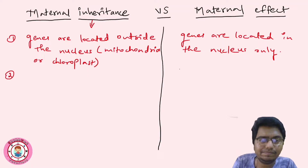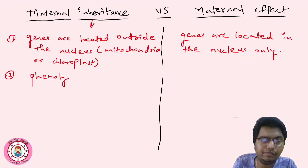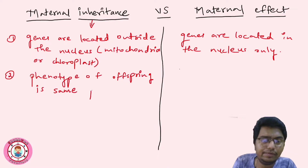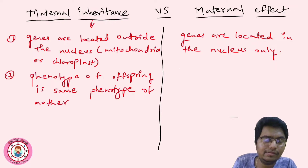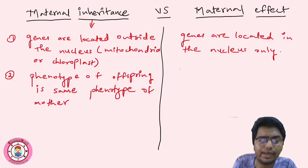The second point is about the phenotype. In maternal inheritance, the phenotype of the offspring is the same as the phenotype of the mother. 'Maternal' relates to the mother, so the offspring's phenotype matches the mother's phenotype.